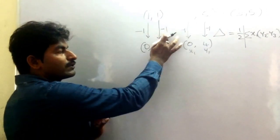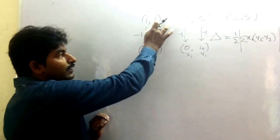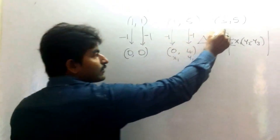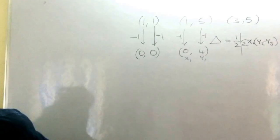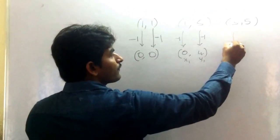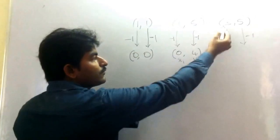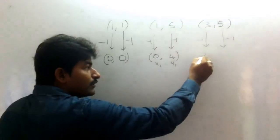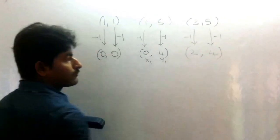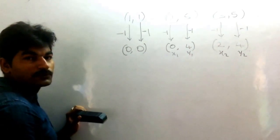And do the same operation - minus one, minus one. For x-coordinate, you have to subtract one unit. And for y-coordinate, you have to subtract one unit from y-coordinate also. Same operation we have to do here also. Here also do minus one and minus one. So three minus one is two, and five minus one is four. Say this point is x₂, y₂.